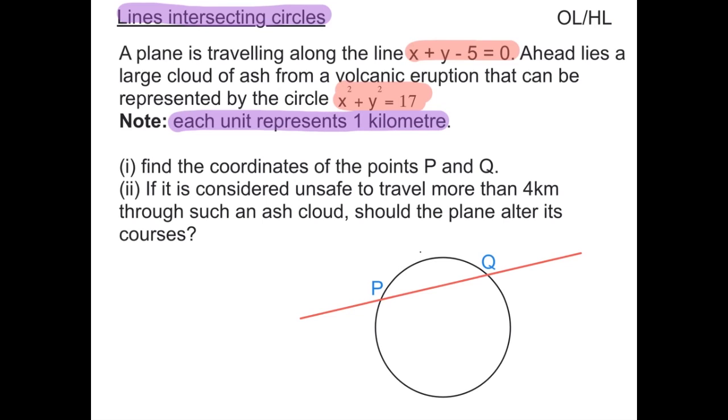First we're asked to find the coordinates of the points P and Q, these points here and here, of intersection between the line and the circle. The second part asks that if it is considered unsafe to travel more than 4 kilometres through such an ash cloud, should the plane alter its course?